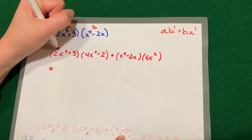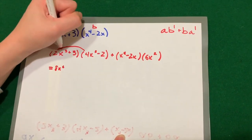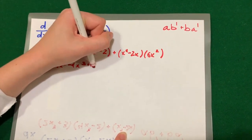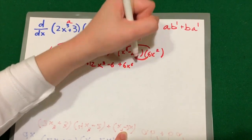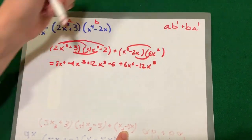Then you can FOIL your answer to simplify it. You can also distribute to simplify it.